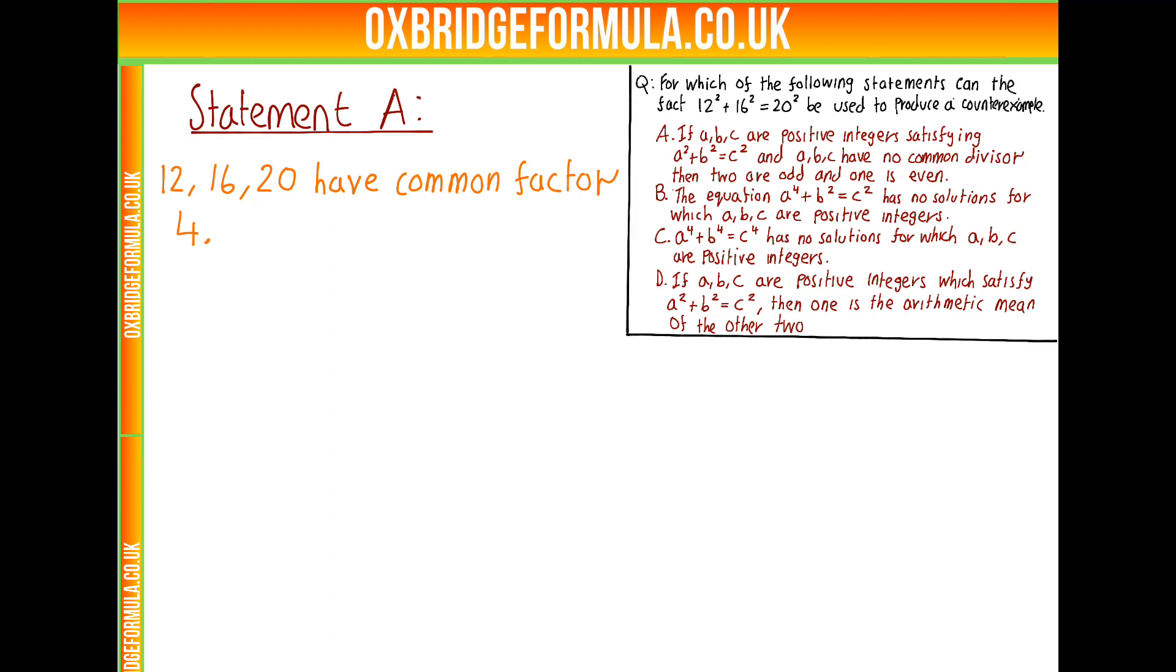These have a common factor of 4, so this can't be a counterexample for A. However, we can divide everything through by 4, and then they won't have a common factor. 3, 4, 5 is a well-known Pythagorean triple. So if we consider 12 over 4, 16 over 4, and 20 over 4, we have 3 squared plus 4 squared is 5 squared.